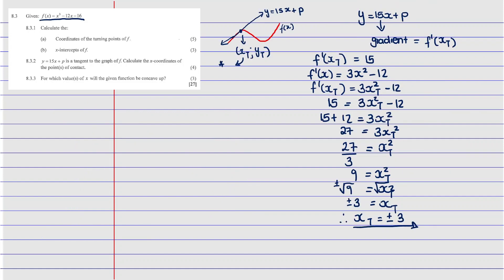Now we move to 8.3.3: for which values of x is the function concave up? To find this we need the point of inflection by solving the second derivative equal to zero. The second derivative of f'(x) = 3x² - 12 is f''(x) = 6x. Setting 6x = 0 gives x = 0.